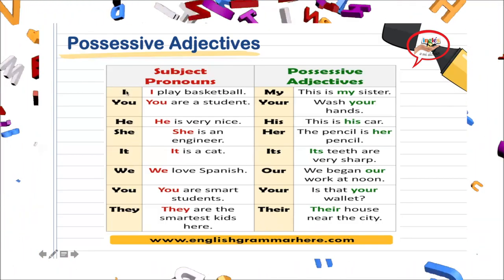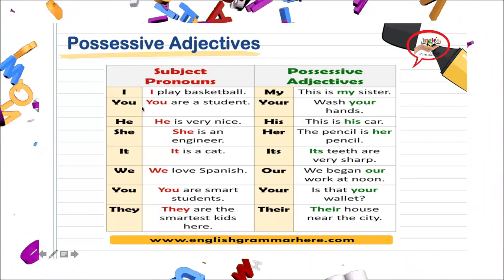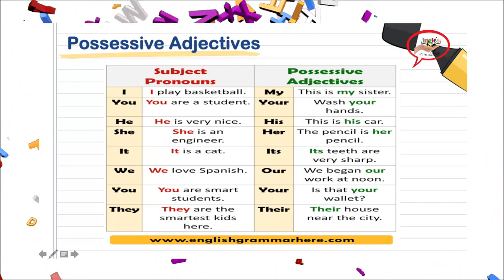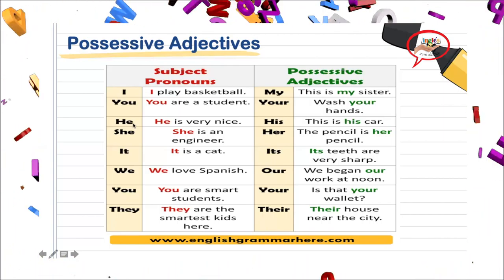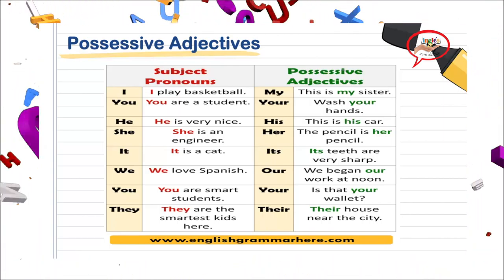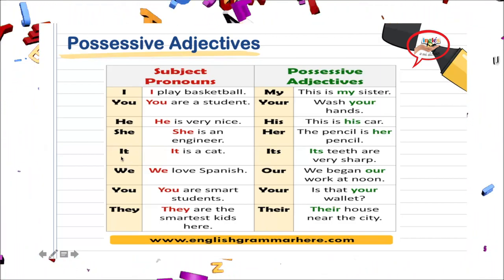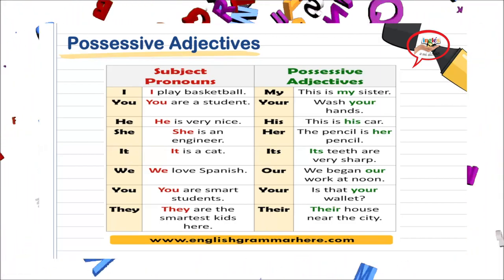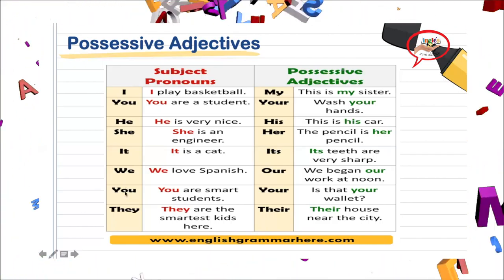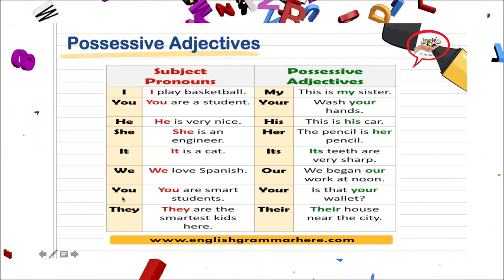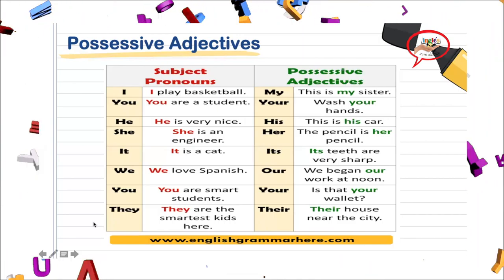I se entiende por yo. You se entiende por tú. He se entiende por él. She se entiende por ella. It se entiende por eso. We se entiende por nosotros. You se entiende por ustedes. Y they se entiende por ellos.